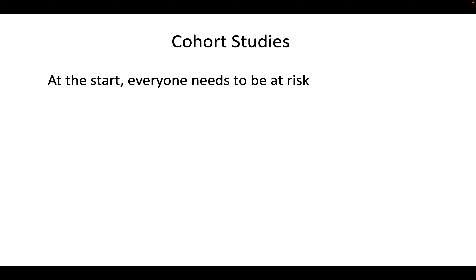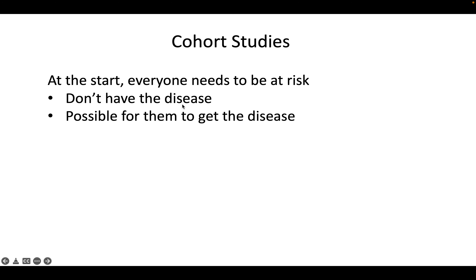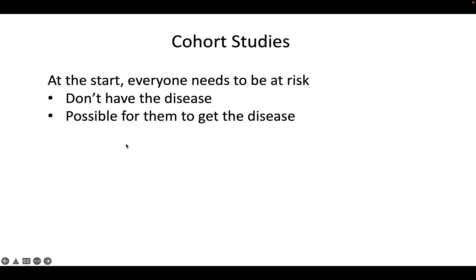Two important things about your starting cohort: everyone must be at risk. That means they don't have the disease right now, and it's possible for them to get it. Certain diseases only affect people of certain age groups or biological sexes, so participants need to be eligible to get the disease and must not have it yet.